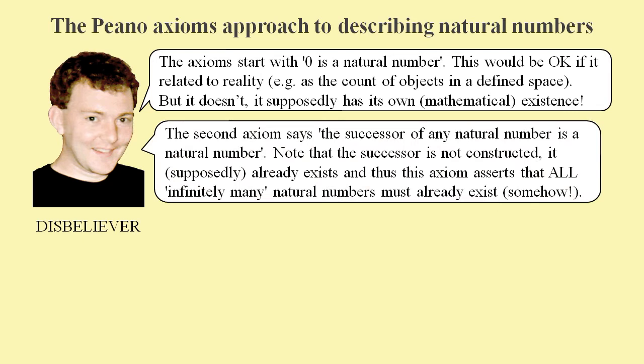The second axiom says the successor of any natural number is a natural number. Here, the successor is not constructed as it would need to be if it related to reality. No, this axiom asserts that all infinitely many successors supposedly already exist.